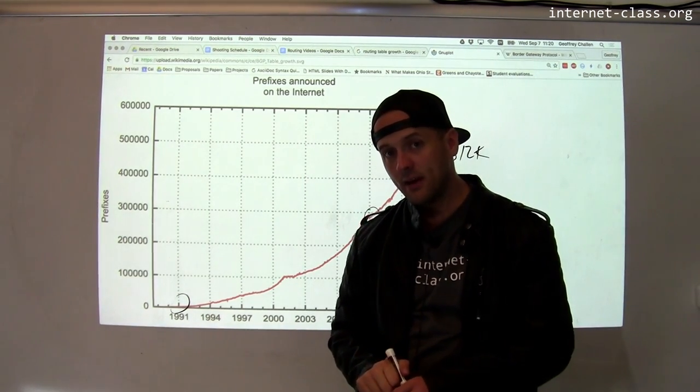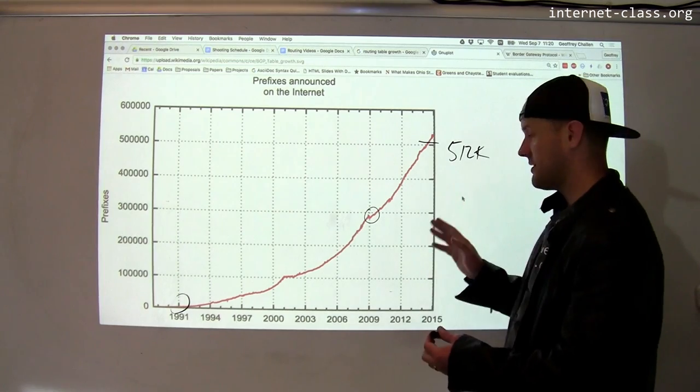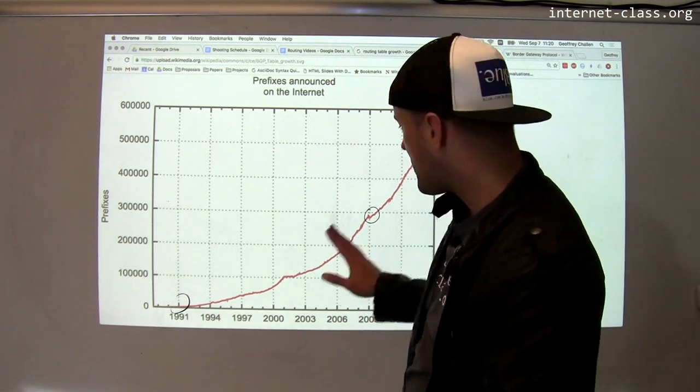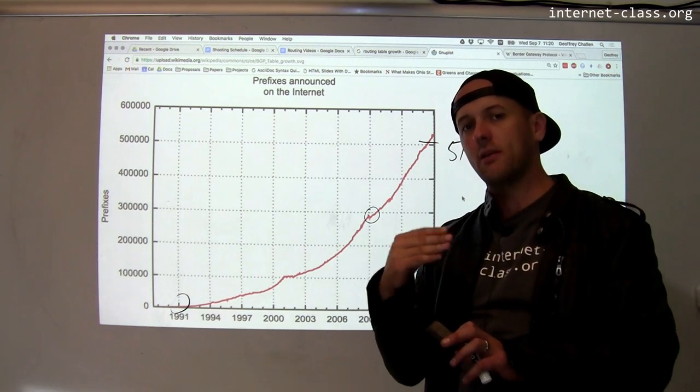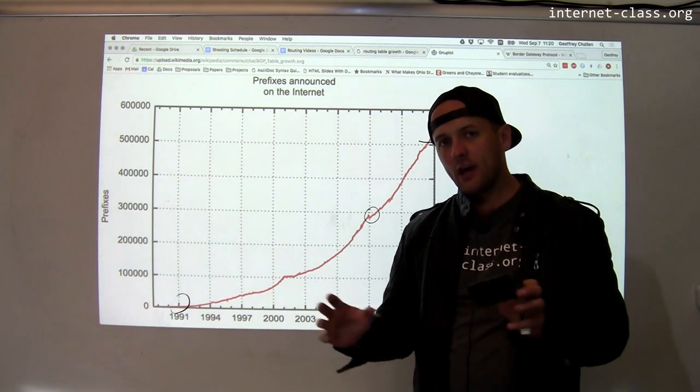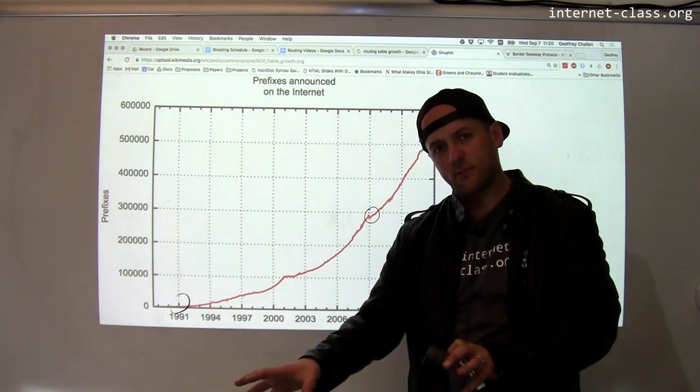And what happened is that a bunch of routers, and it's actually ended up, people have been anticipating this, but this ended up happening sooner than people thought. And it turned out that a particular ISP suddenly took one of their networks and divided it into smaller pieces.